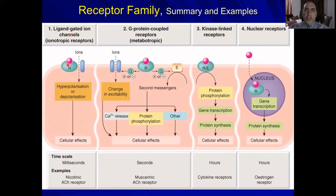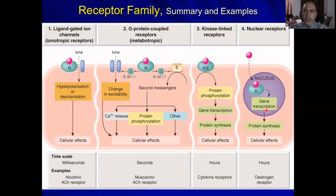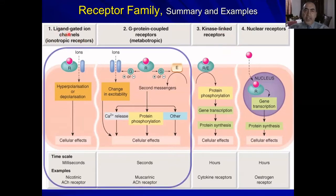Please pay attention. This is the cell and this is the cell membrane. Notice how many cell membrane-bound receptors there are — three. How many nuclear or intracellular receptors? Only one type. We are not going to discuss kinase-linked or nuclear receptors. We are going to focus only on ligand-gated ion channels and G-protein coupled receptors.